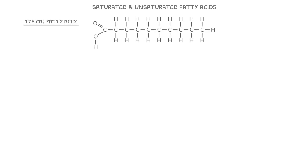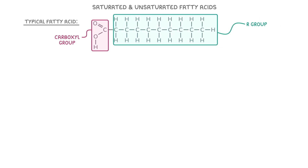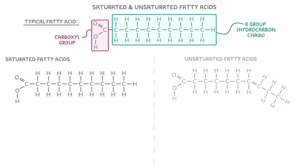Next, let's explore the differences between saturated and unsaturated fatty acids. Fatty acids consist of a carboxyl group, which is COOH, attached to an R group, which is a hydrocarbon chain, and this can vary in length and structure depending on the fatty acid. Now let's compare these hydrocarbon chains in saturated and unsaturated fatty acids and see how these differences affect their properties.